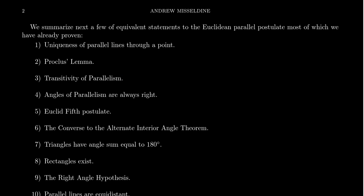Another equivalent: the angle of parallelism is always a right angle. When we discussed the angle of parallelism, we showed that if it were acute you can get multiple parallel lines, implying the hyperbolic parallel postulate — not EPP. Therefore if you have a unique parallel line, the angle of parallelism must be right. We didn't do all the details, but one can connect the dots to show that EPP is equivalent to the angle of parallelism always being right in neutral geometry.